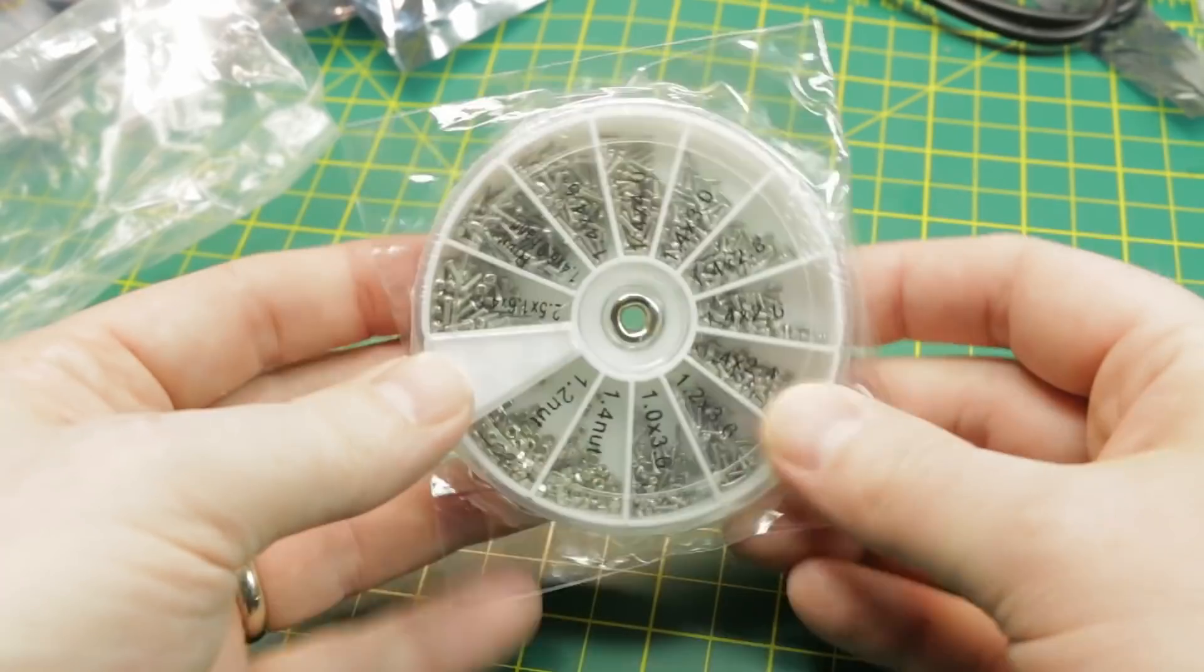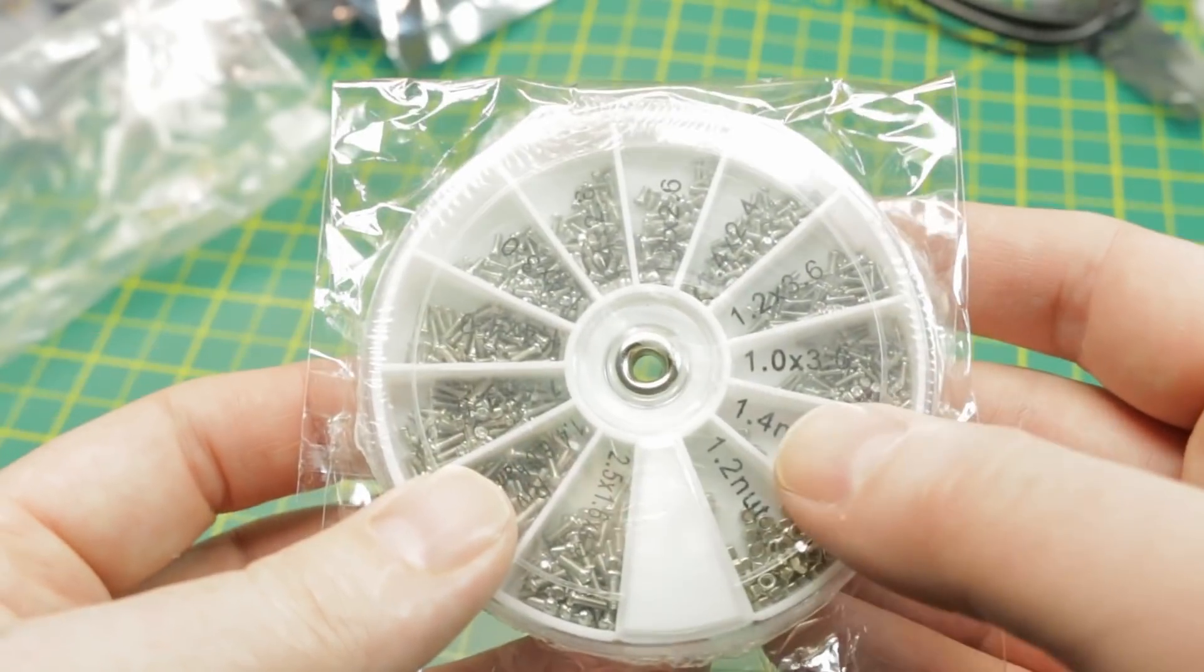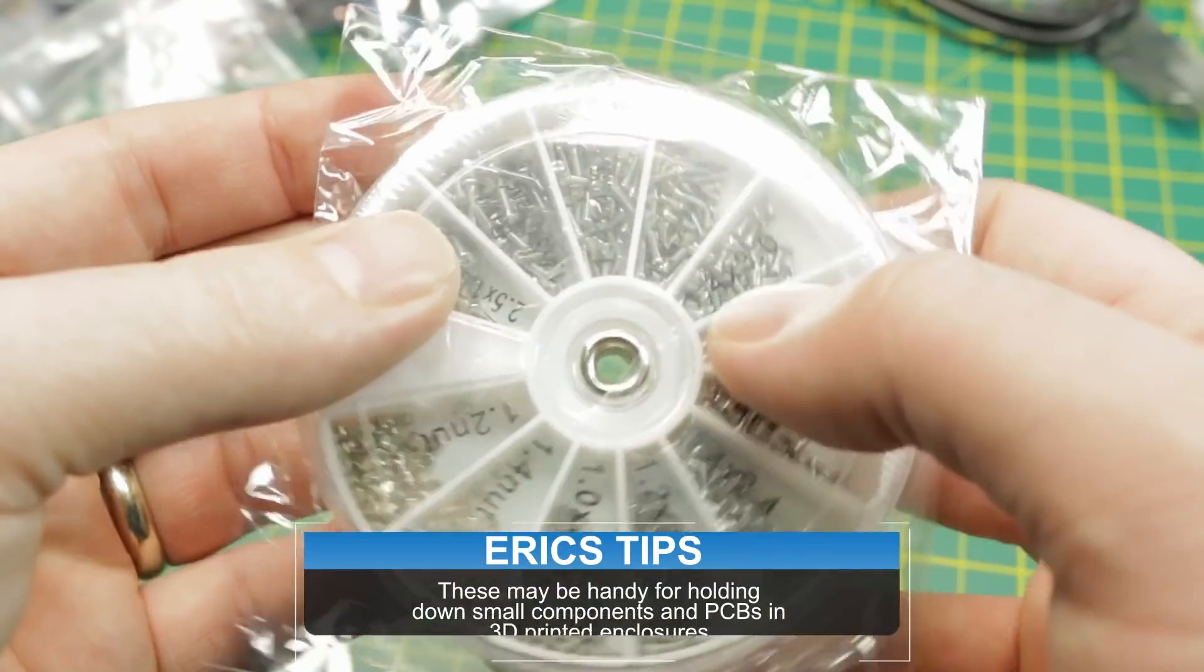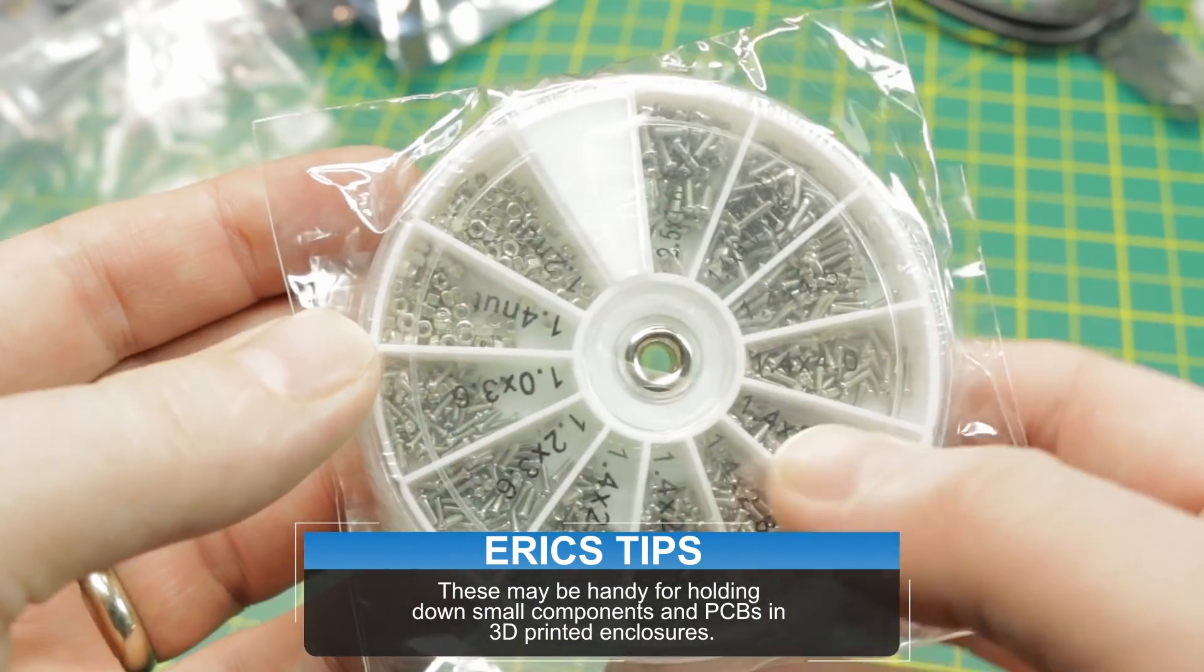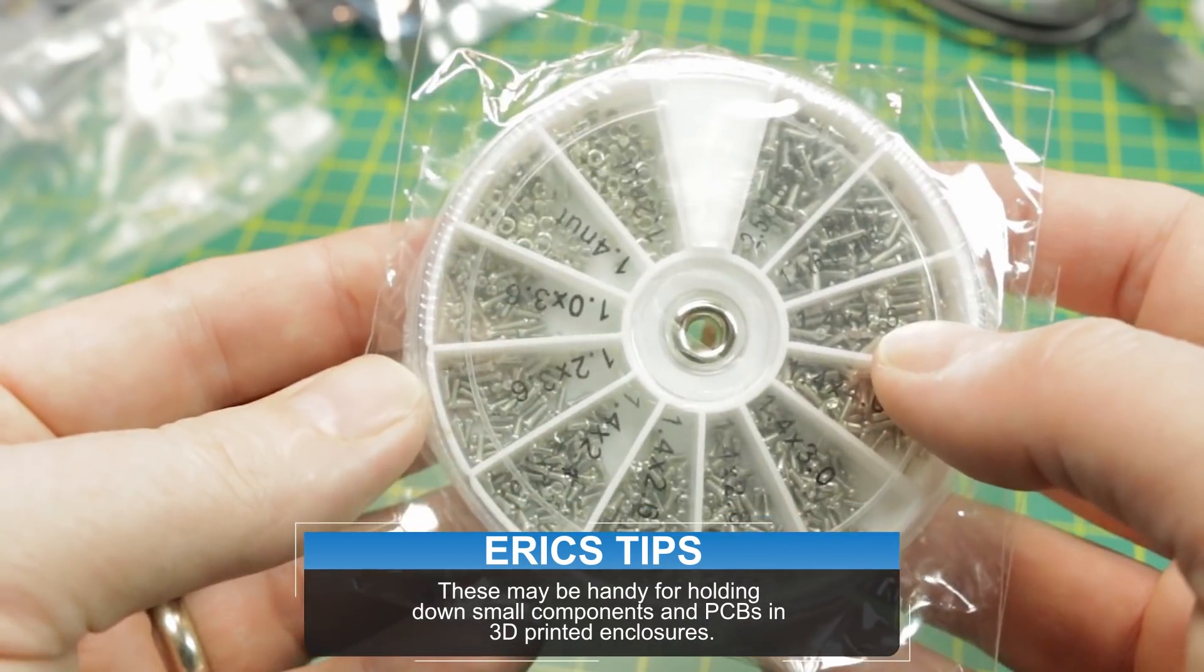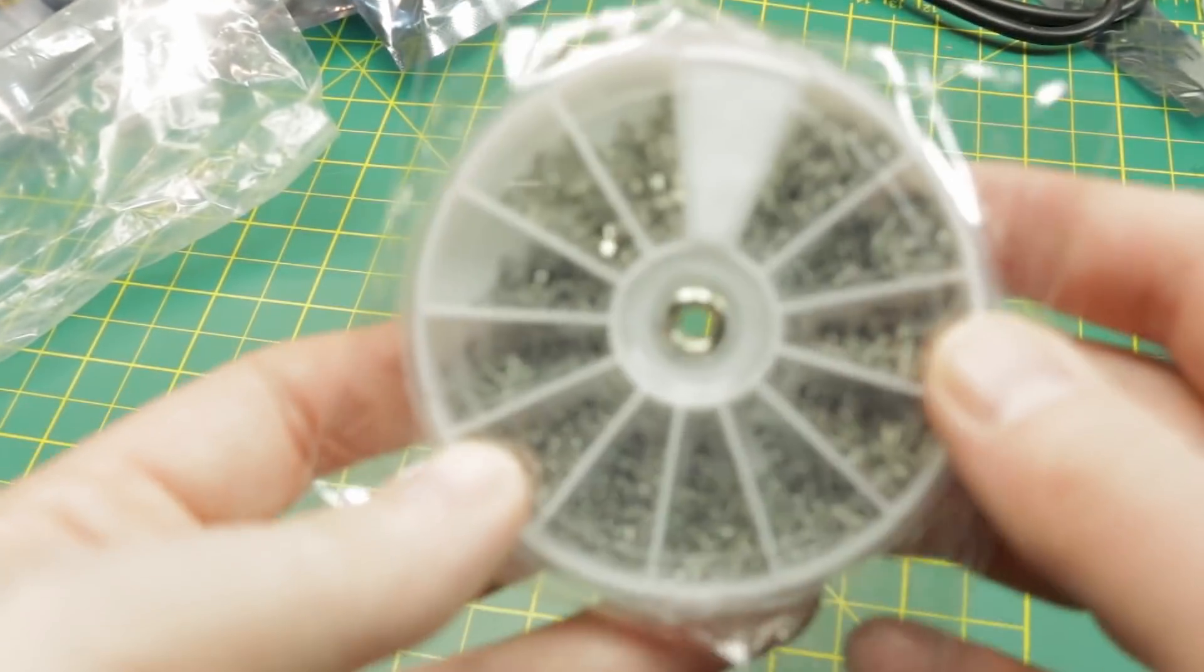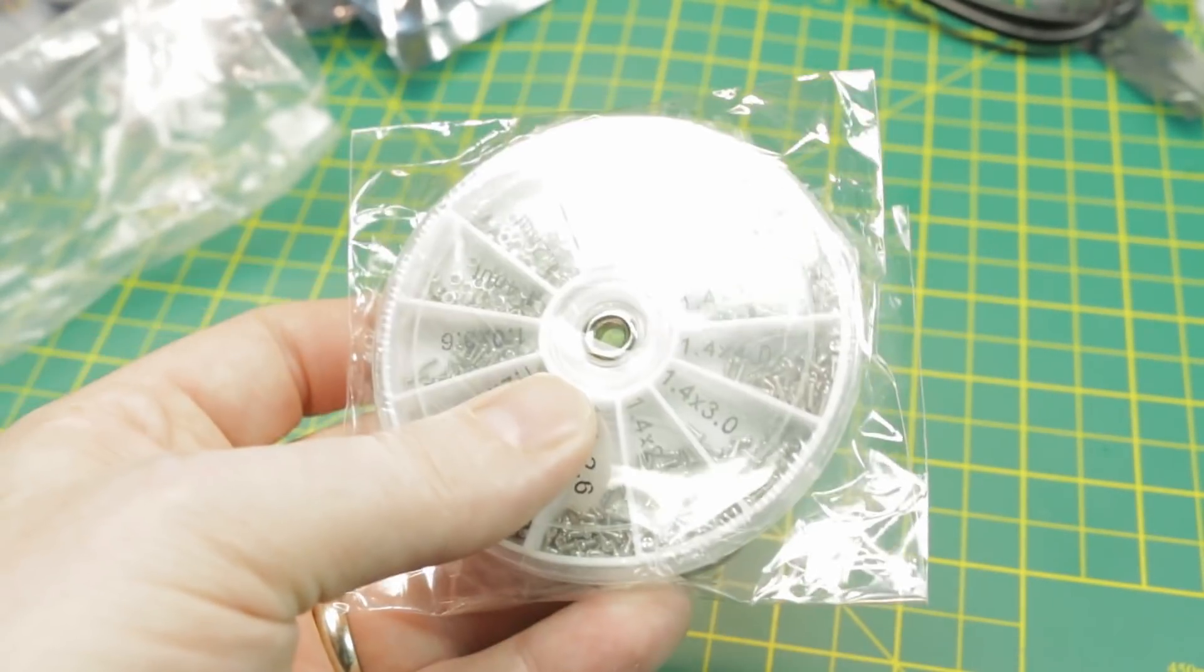Next up, a screw assortment. Tiny, tiny screws. These are 1mm by 3.6, 4mm, or 1.4 by 3.0. A whole assortment of machine screws and nuts. Handy thing. I've never had them this small in an assortment. And I think it'll come in really handy in some projects. But we'll see. We'll give it a go.